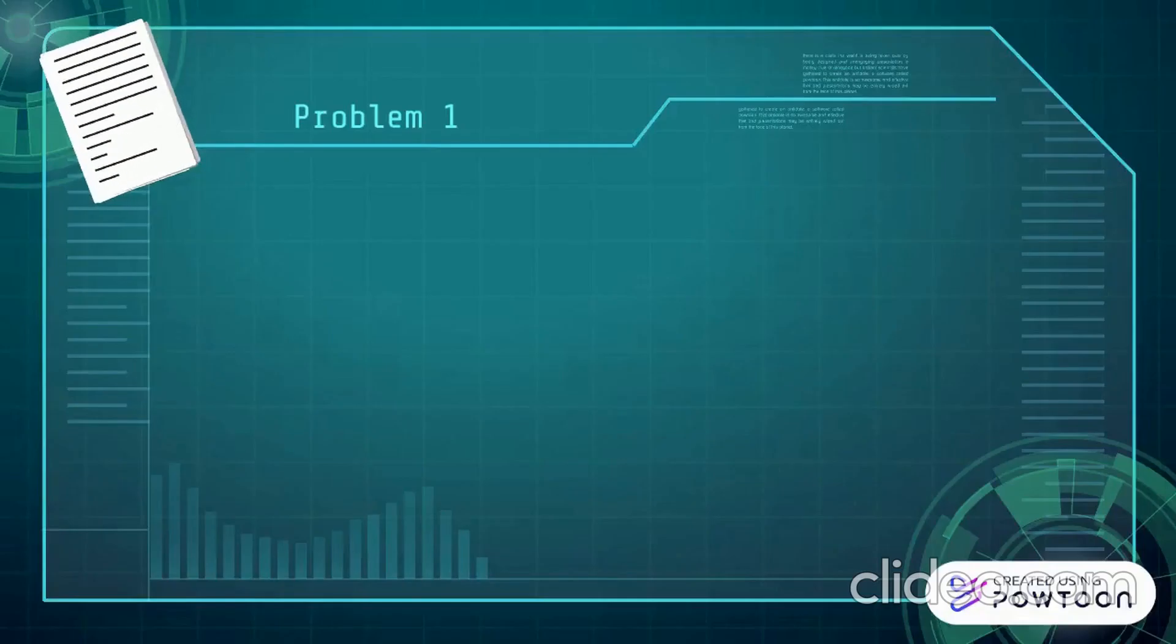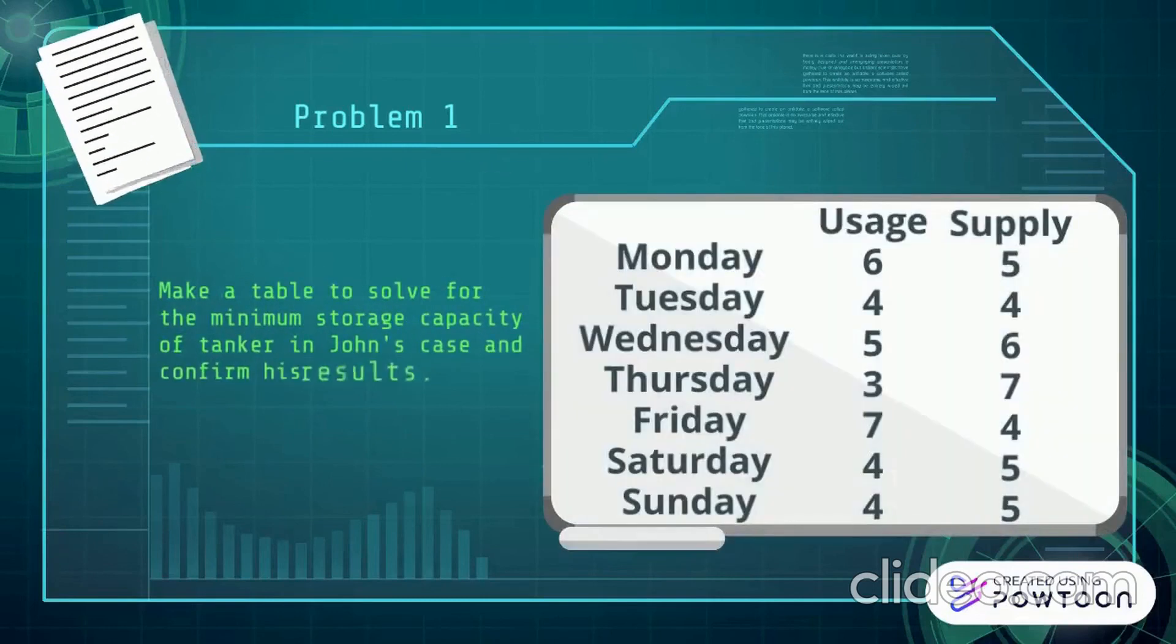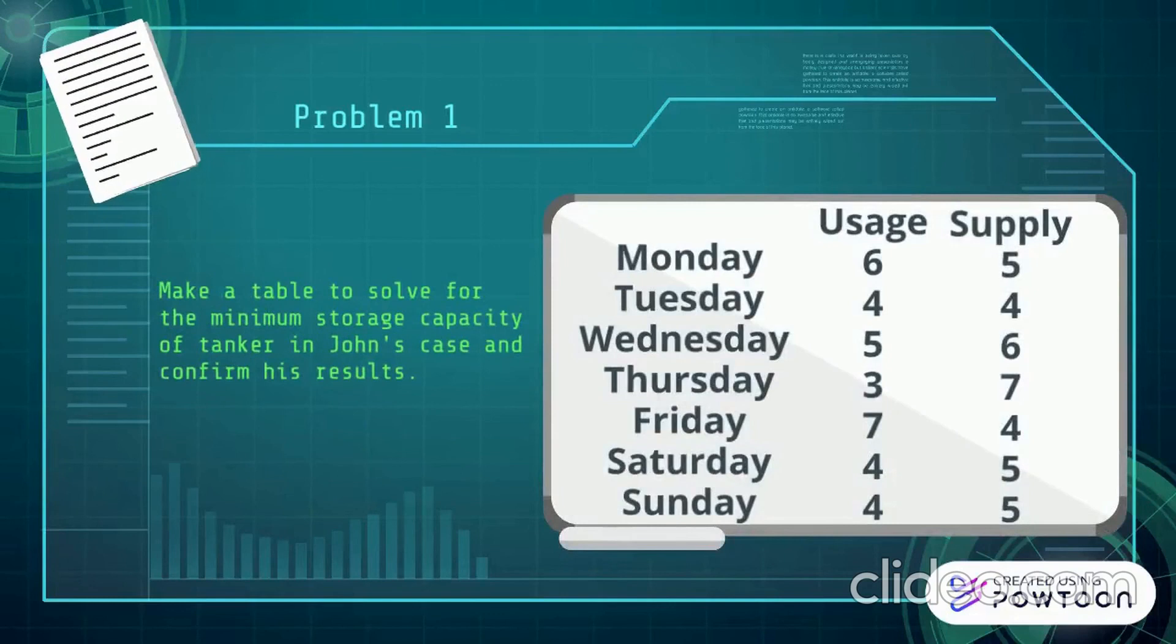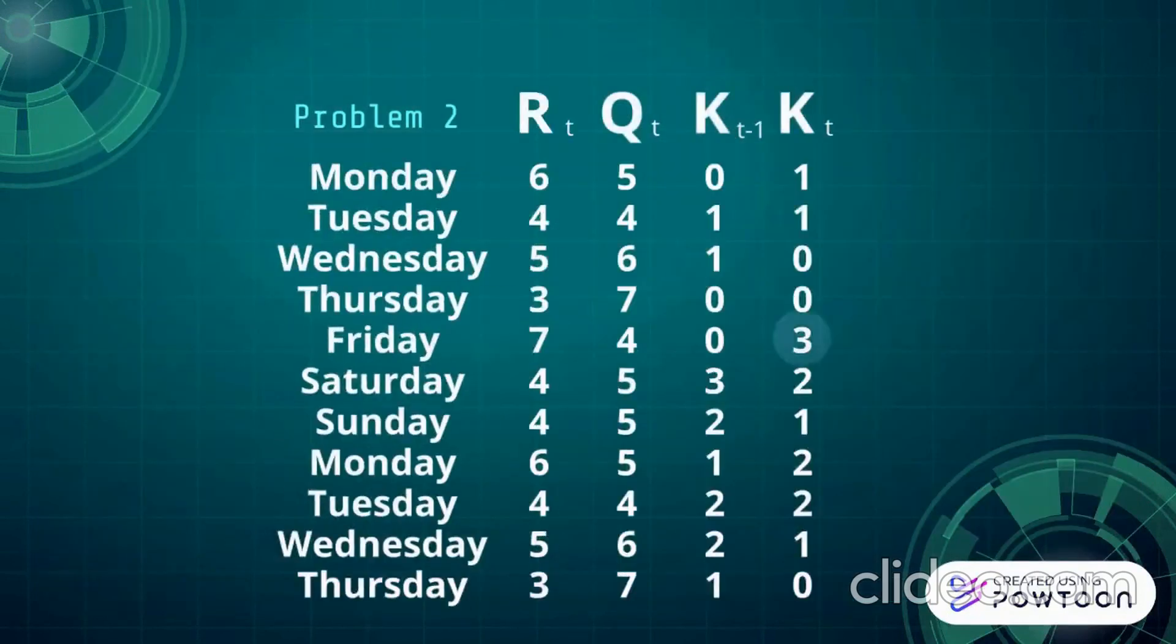The first problem. Make a table to solve for the minimum storage capacity of the tanker in John's case and confirm his results. Now we can clearly see that the answer comes out to be 3.